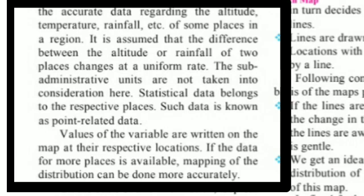It is assumed that the difference between the values of altitude or rainfall of two places changes in a uniform manner. So if the changes are uniform, it is assumed that any intermediate area between two places also changes uniformly in that direction.